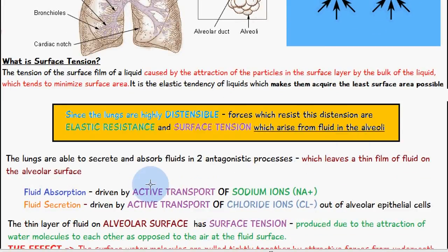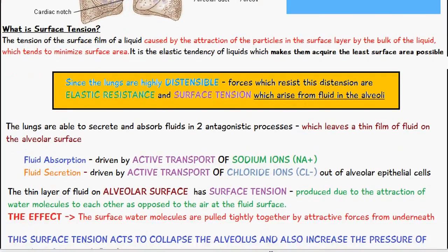Fluid absorption is driven by the active transport of sodium ions (Na+), and fluid secretion is driven by the active transport of chloride ions (Cl-) out of the alveolar epithelial cells. The thin layer of fluid on the alveolar surface has surface tension, produced due to the attraction of water molecules to each other as opposed to the air at the fluid surface.